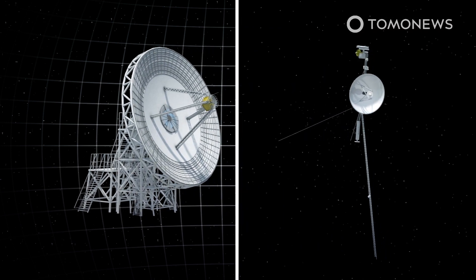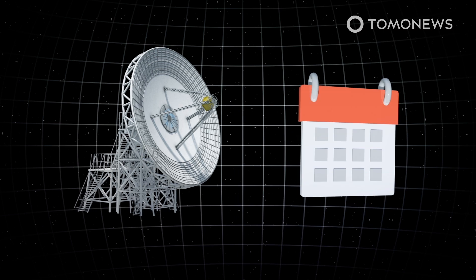The dish, named Deep Space Station 23, is expected to be completed in two and a half years.